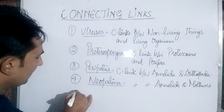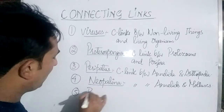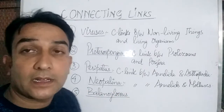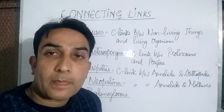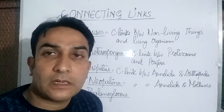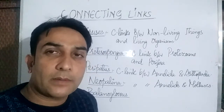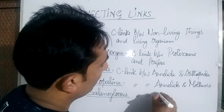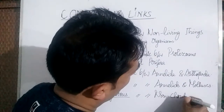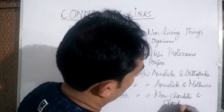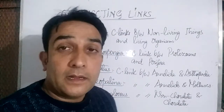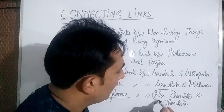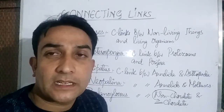After that, there is another example of a connecting link — Balanoglossus. This animal belongs to the subphylum Hemichordata and is sometimes also known as tongue worm or acorn worm. It shows some characters of non-chordates and some characters of chordates. So it is a connecting link between non-chordata and chordata. By studying this connecting link we conclude that chordates have evolved from some non-chordate ancestors.